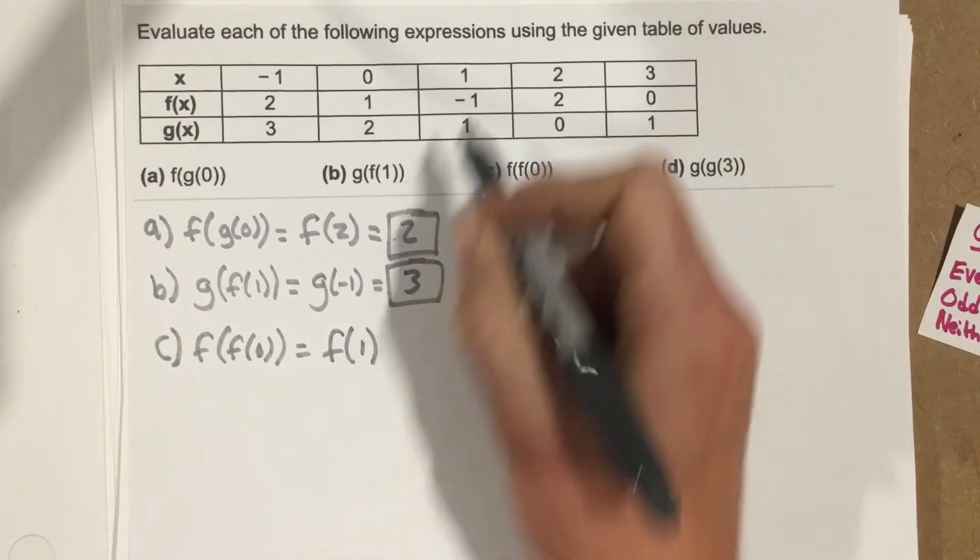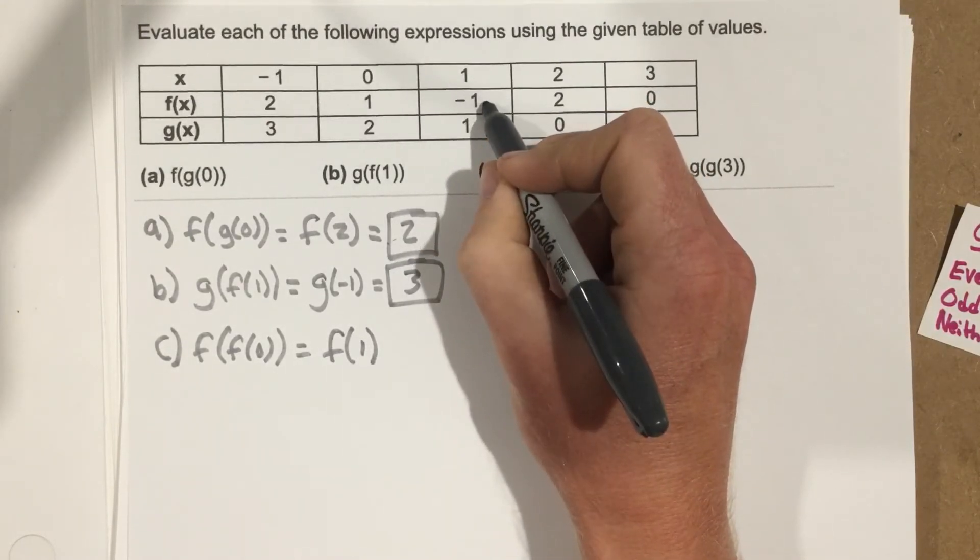I go to the 1 value for x, look at the f output, and that's negative 1.